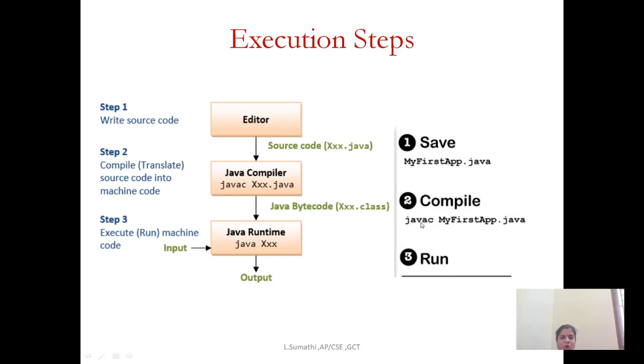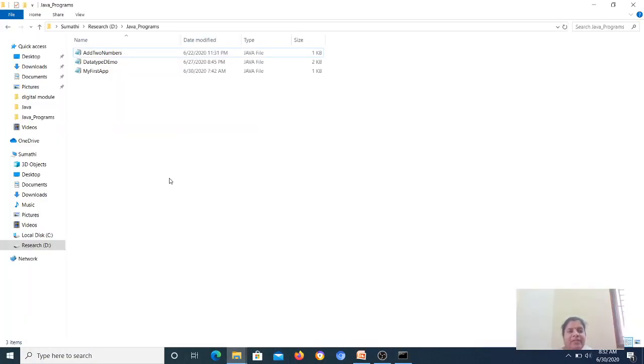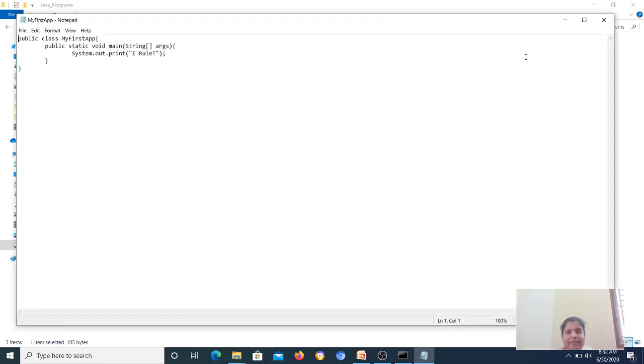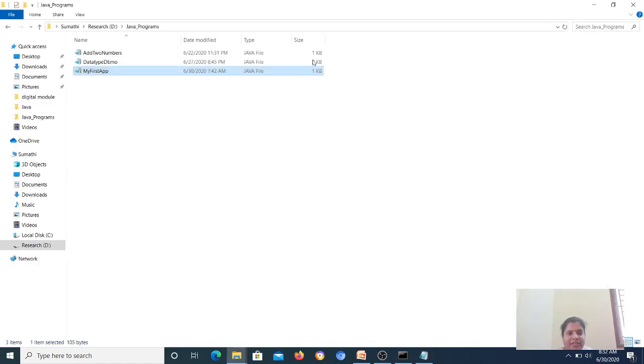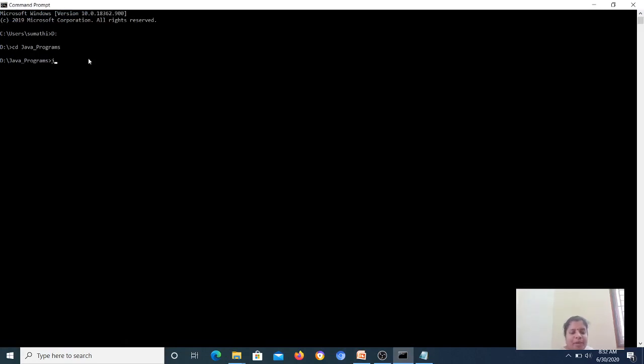Then I have to compile it by just passing my source program. Then I have to run. To run, you just call Java and your class file. Now we will see the execution. My first step is I have to compile the program because I have already typed and saved the file with an extension .java. This is my first program. I have typed it in the notepad and saved with an extension .java. Now we are going to compile it. To compile it, you have to give the command javac and then you pass the command.